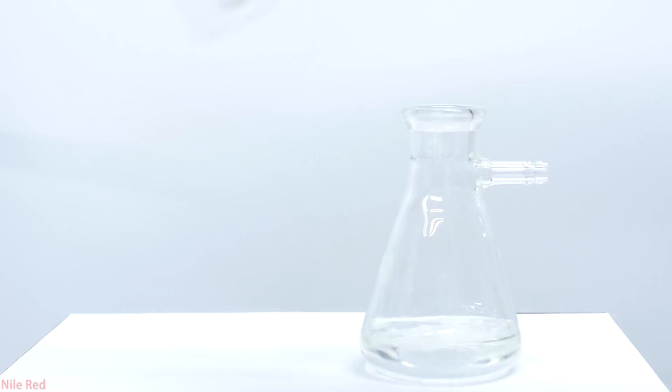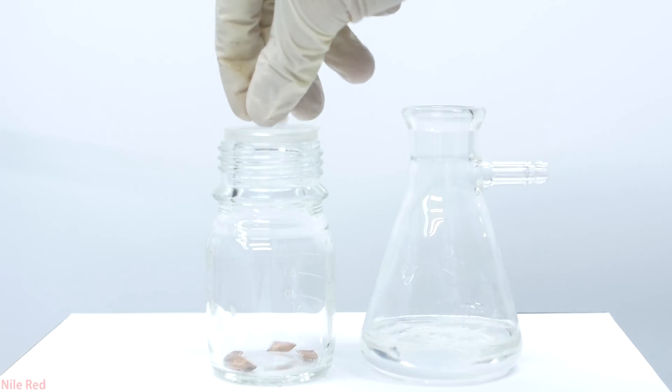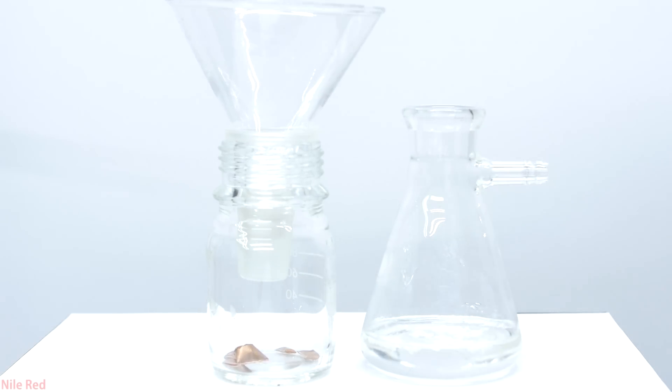After letting it sit for a few minutes, we're ready to put our methyl iodide into storage. To store it, I put it into a nice Pyrex jar with some freshly polished copper at the bottom. It's really hard to see here, but the funnel that I'm using has a little bit of cotton in it to filter out the calcium chloride.